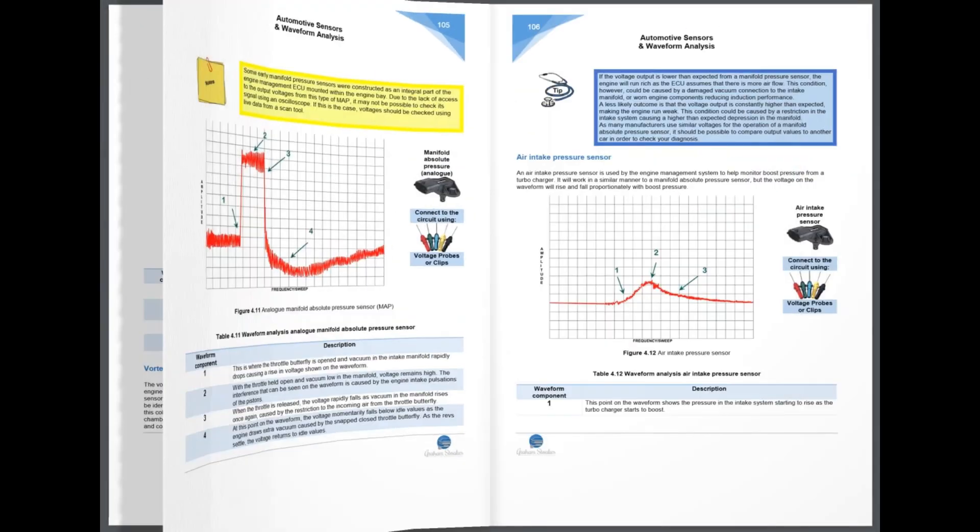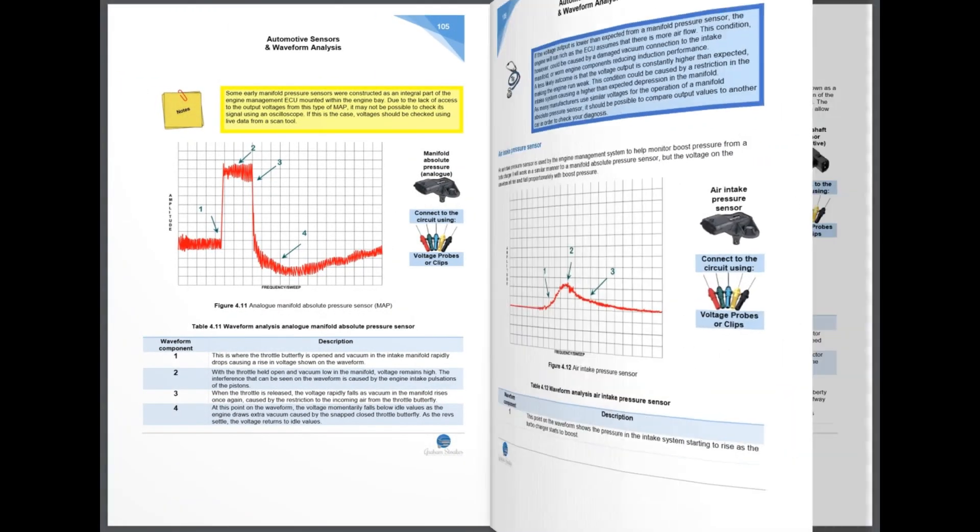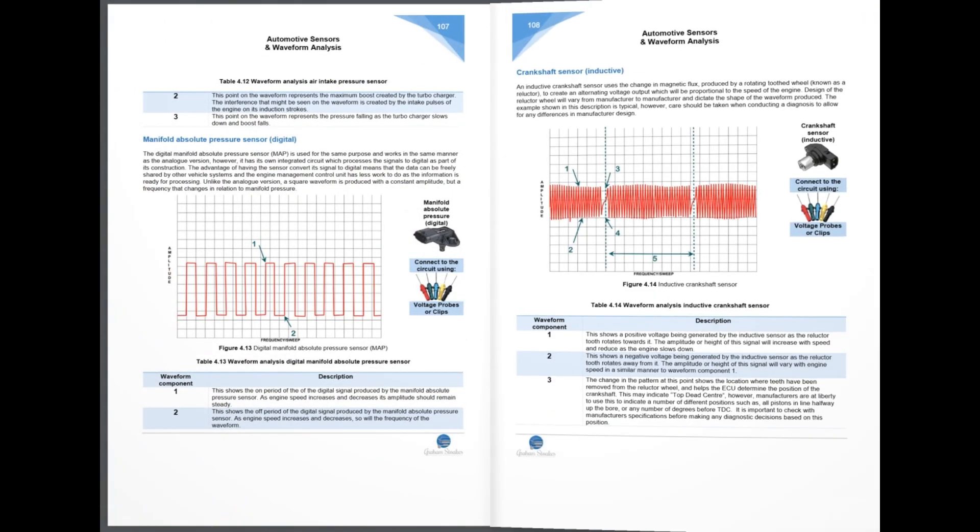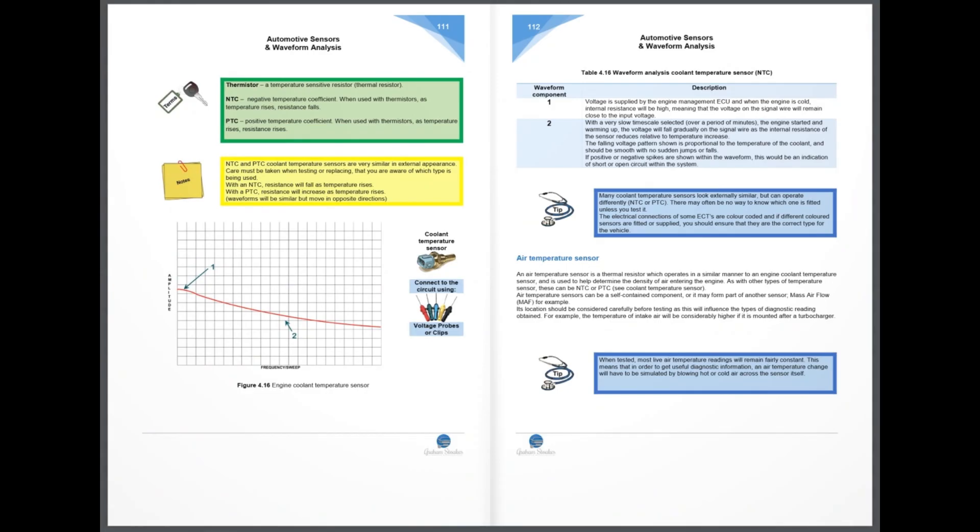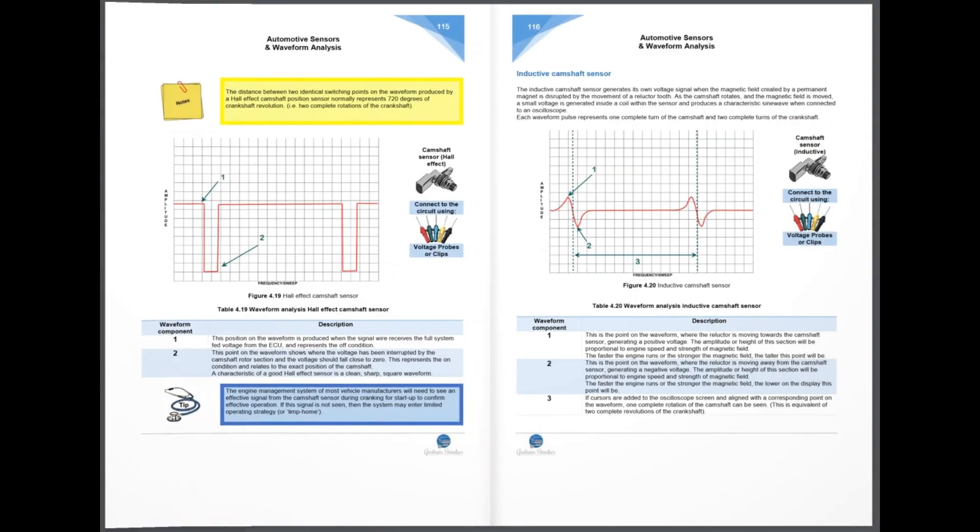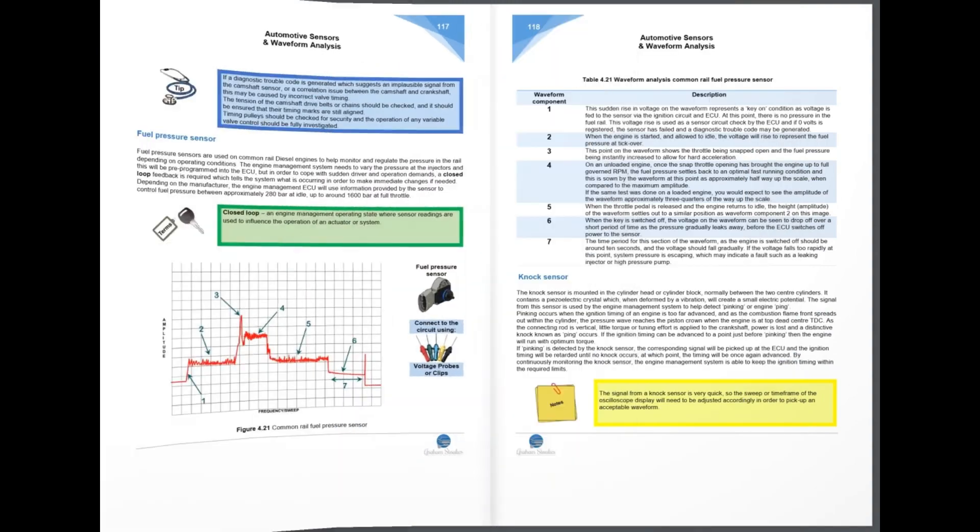Understanding how to interpret these codes and use them in conjunction with other diagnostic tools like oscilloscopes is key to accurately diagnosing and fixing vehicle issues. It is the oscilloscope, or scope, that can truly test the operation and health of a system component.